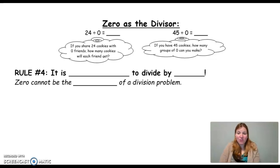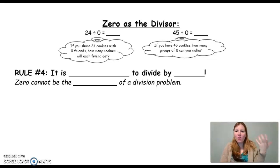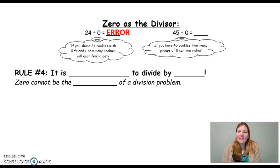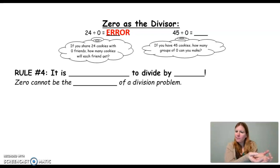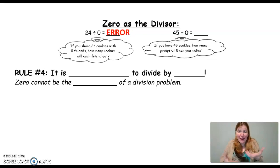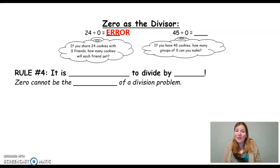Now let's take a look at the last situation, which is 0 as the divisor. Remember, the dividend is like the whole watermelon, the divisor is the knife that cuts it into groups, and the quotient is the individual slices you get. So let's think about 0 as the divisor — this is pretty interesting. 24 divided by 0 asks: if you share 24 cookies with 0 friends, how many cookies will each friend get? The answer is actually an error. If I start with 24 cookies, can I share them with 0 people? No, because I have to share them with at least 1 person. If I have something, I can't make 0 groups of it. So the answer is literally an error. If you punch this into a calculator, there's no correct answer — we say that it is undefined. It's impossible to solve.